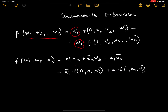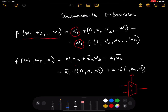If you have a selector, it has two values. In Shannon's expansion, in the first stage you substitute w1 in the function with zero, and in the second case you substitute the selector variable with one, then add the two cases together with a plus.